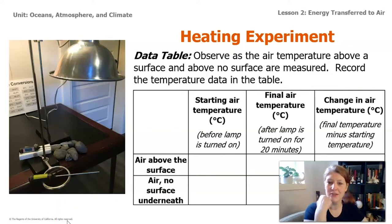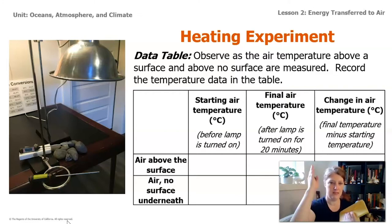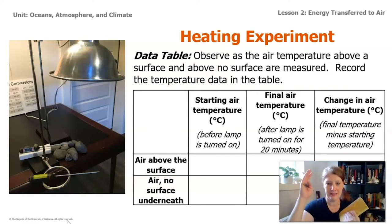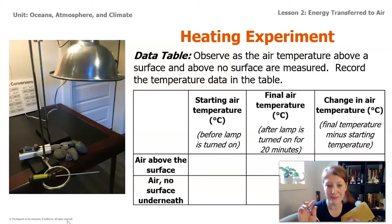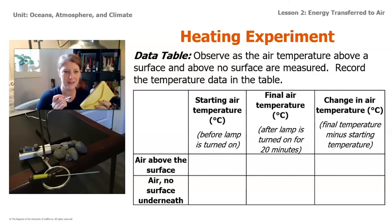For this part, you're going to need to make a data table in your notebook — four columns and three rows. We have the starting air temperature before the lamp is turned on, the final air temperature after the lamp has been on for 20 minutes, and then we'll do a quick subtraction — final minus starting — to find the change in air temperature. Pause the video right here so you can create this table, and once you're done, turn the video back on and we'll collect some data together.